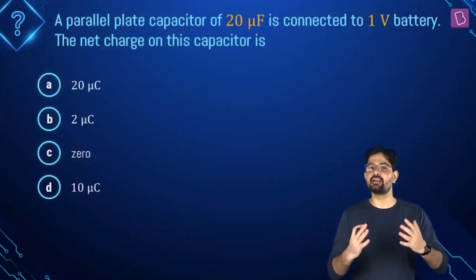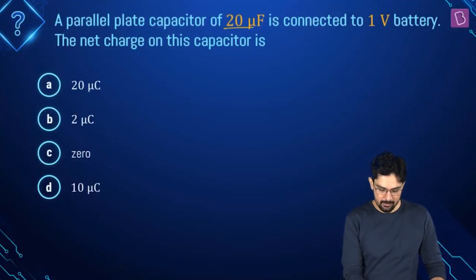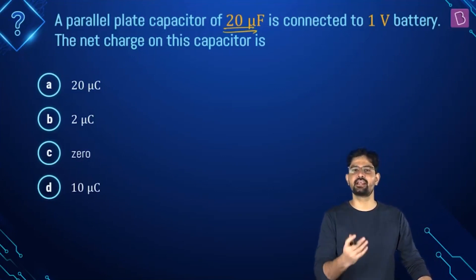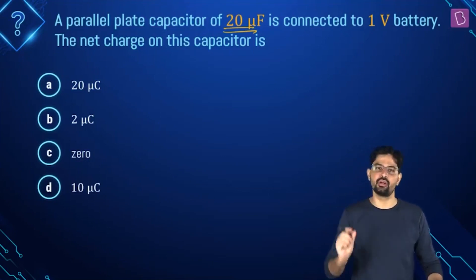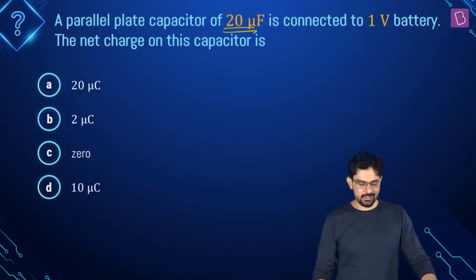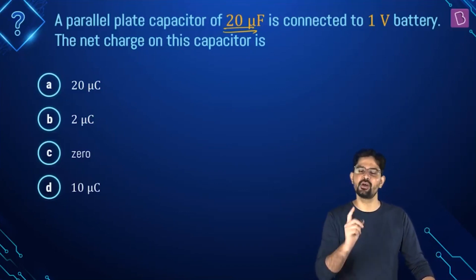In this case, you have a parallel plate capacitor whose capacitance is given as 20 microfarad, and this capacitor is connected to a battery whose voltage is 1 volt. You have to find out the net charge on this capacitor, and these are your given options.